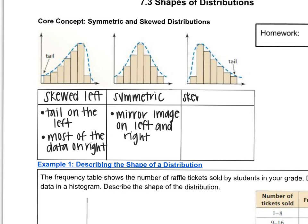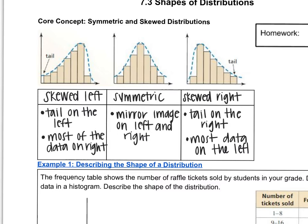Our third option is called skewed right. If something is skewed right, that means the tail is on the right. Similar to when we had skewed left, that means most of the data now is actually going to be on the left. The higher bars are on the left side of the graph, which means most of the data is on the left.